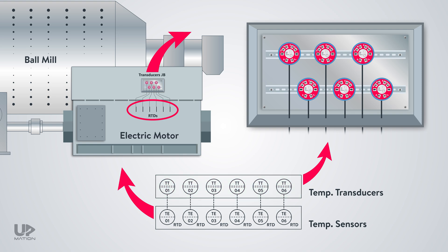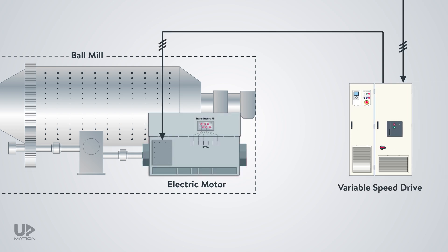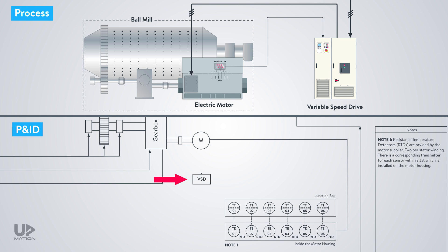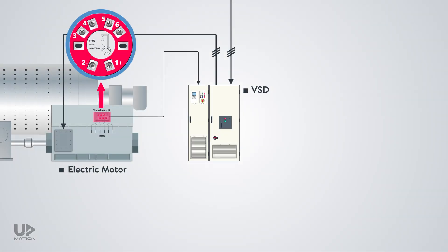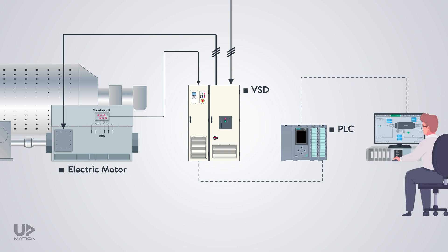We're not done with this part yet. As the ball mill electric motor is controlled by a variable speed drive, or VSD, I decided to connect its temperature transducers directly to the VSD. Therefore, I will do so in the P&ID — first consider the VSD and then connect the transducers to it. I also want to send the signals from these transducers to a PLC card and then transmit them over a network between the VSD and PLC.